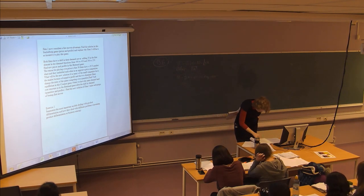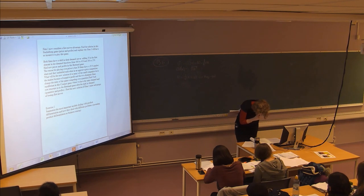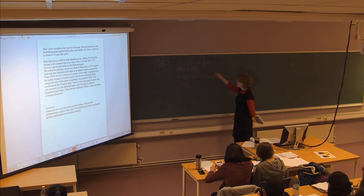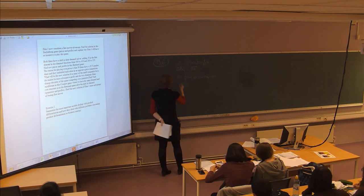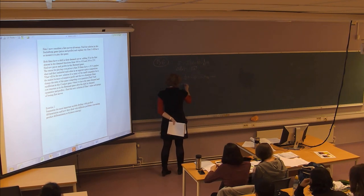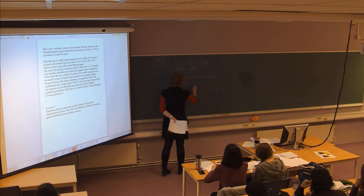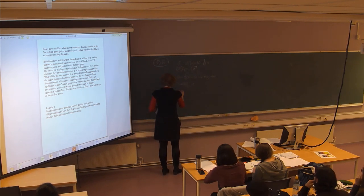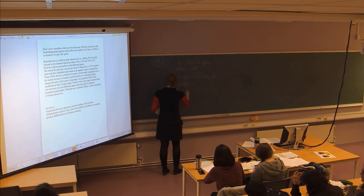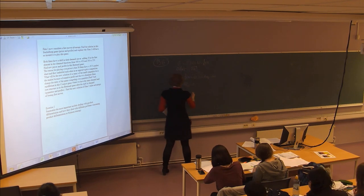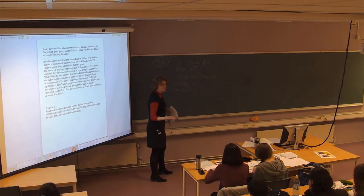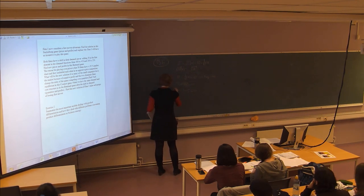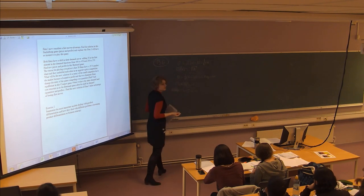Part B: in the long-run equilibrium with n equals 100, profit equals zero and consumer surplus equals the square root of 100 equals 10. Total welfare — the sum of consumer surplus and profit — is therefore 10. This is the welfare from having 100 firms on the market.